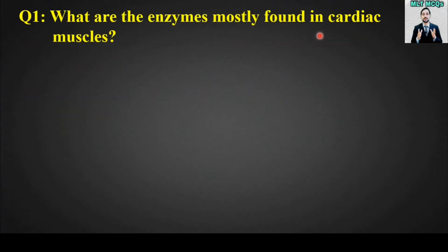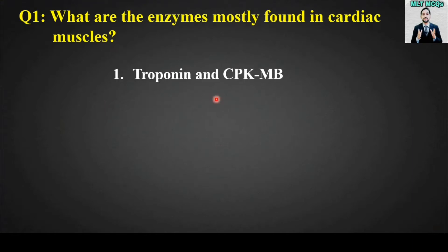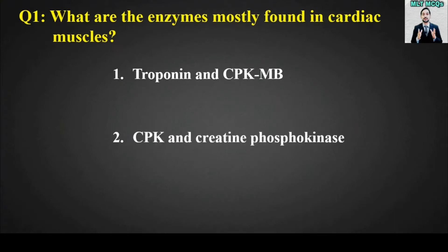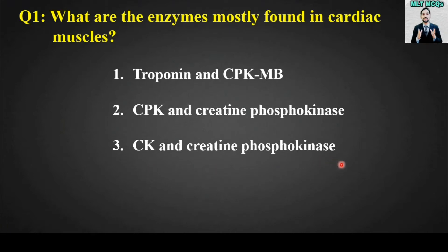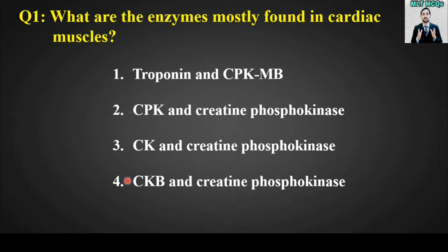MCQ number one: What are the enzymes mostly found in cardiac muscles? Options are: troponin and CpkMB; CPK and creatinine phosphokinase; CK and creatinine phosphokinase; CKB and creatinine phosphokinase. The right answer is option number one — troponin and CpkMB are the enzymes mostly found in cardiac muscles.